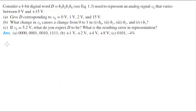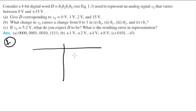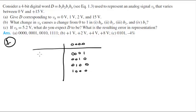Let's move on to Part B, where they ask what change in VA causes a change from 0 to 1 in B0, B1, B2, and B3. Basically it's the same but backwards. If we start at 0,0,0,0, what causes a change to 1 in B0 gives 1,0,0,0; a change in B1 gives 0,1,0,0; a change in B2 gives 0,0,1,0; and a change in B3 gives 0,0,0,1. What are the voltages on this side?